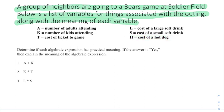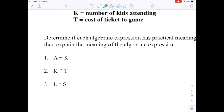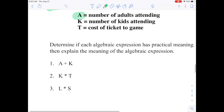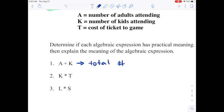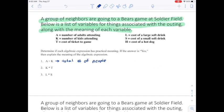Throughout this lesson we'll look at variables and decide what real-world meaning they have, and look at real-world meaning and write expressions that match. Starting with A plus K: A represents the number of adults attending and K represents the number of kids attending. If we add those two things together, we get the total number of people attending the game.